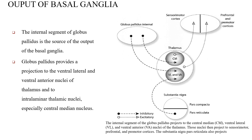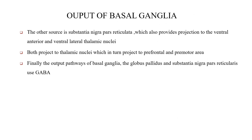The outputs of the basal ganglia: the internal segment of the globus pallidus is the major source of output, providing projections to the ventral lateral and ventral anterior nuclei of the thalamus, and to the intralaminar thalamic nuclei — especially the centromedian nucleus. The other source is the substantia nigra pars reticulata, which also projects to the ventral anterior and ventral lateral thalamic nuclei. Both project to thalamic nuclei, which in turn project to the prefrontal and premotor areas. Both the globus pallidus and substantia nigra pars reticulata use GABA as their output neurotransmitter.